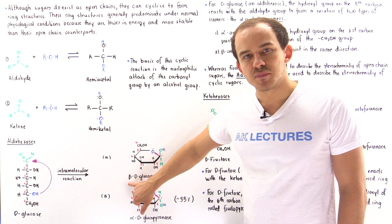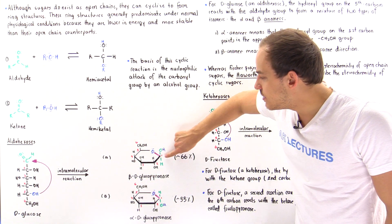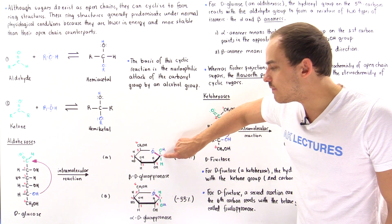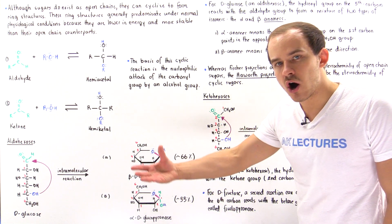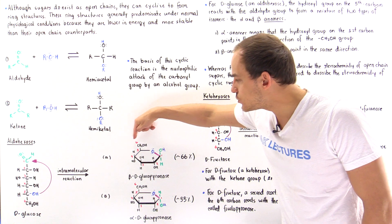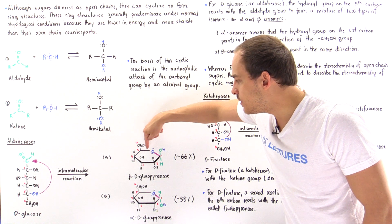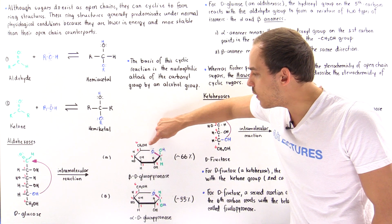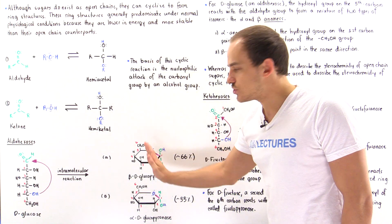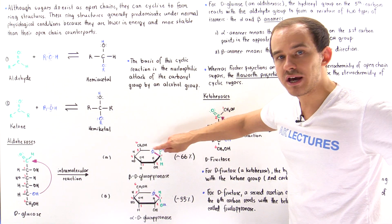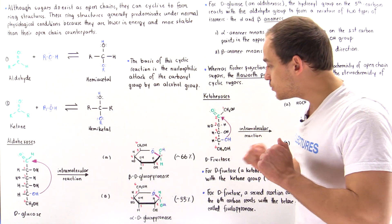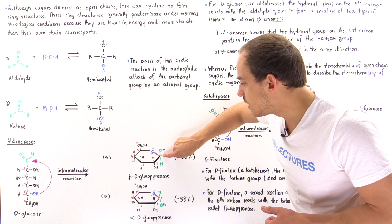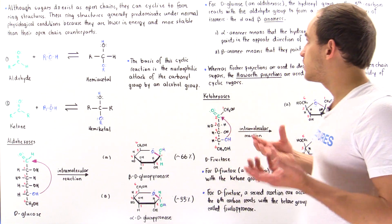What is the meaning of the beta? If we examine carbon number 1, the beta simply means that the hydroxyl group of carbon number 1 — known as the anomeric carbon — points in the same direction as the CH2OH group bound onto carbon number 5. So both point upward. When they point in the same direction, that type of sugar is known as the beta-anomer, because carbon number 1 is the anomeric carbon.